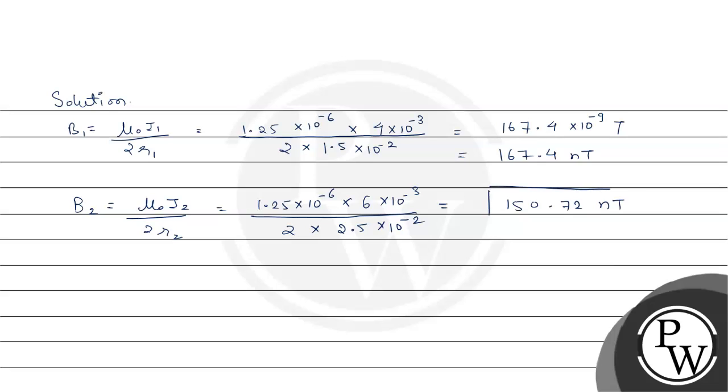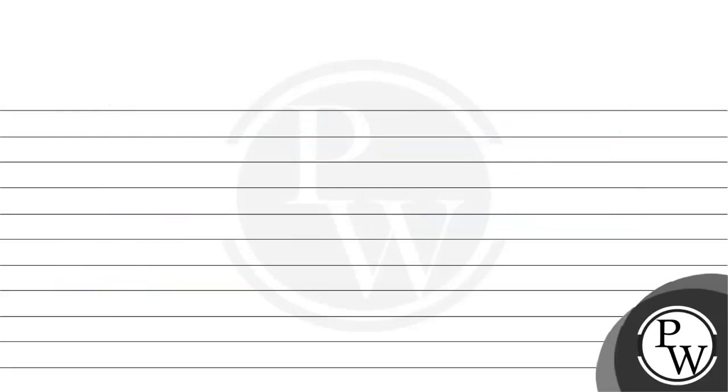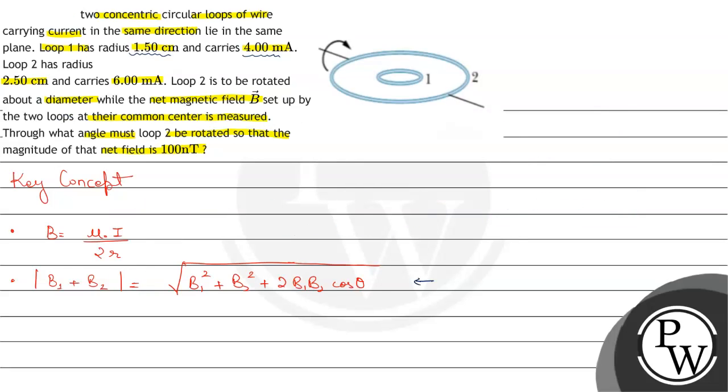So these are the values of B1 vector magnitude and B2 vector magnitude. Now we have to find magnitude of B1 plus B2 vector to be equal to 100 nanotesla. So let's put it into our formula which we have discussed in key concept.